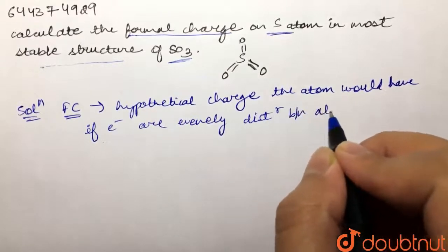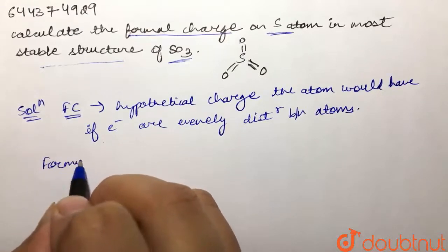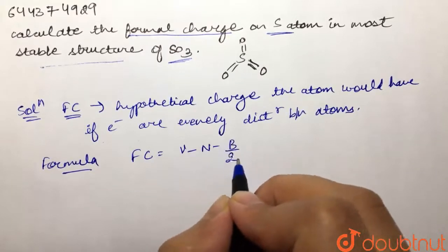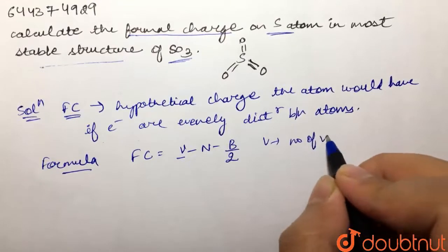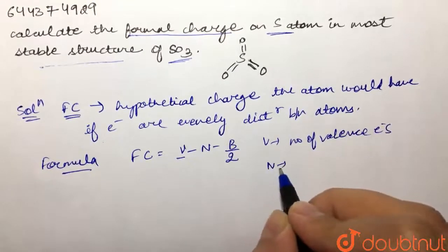The formula we use to calculate formal charge is: FC = V - N - B/2, where V is the number of valence electrons, N is the